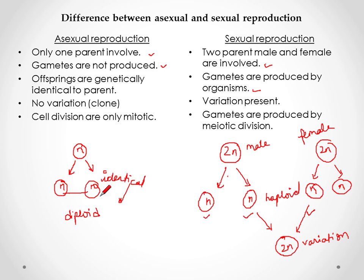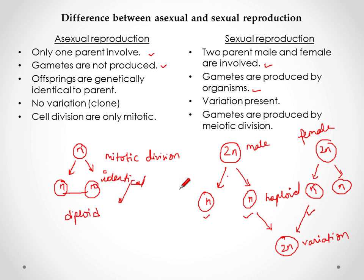In asexual reproduction you cannot see any kind of variation, because the number of chromosomes present in the parent is the same as in their daughter cells. This is mitotic division, whereas sexual reproduction involves meiotic division. We will discuss further in our next video.